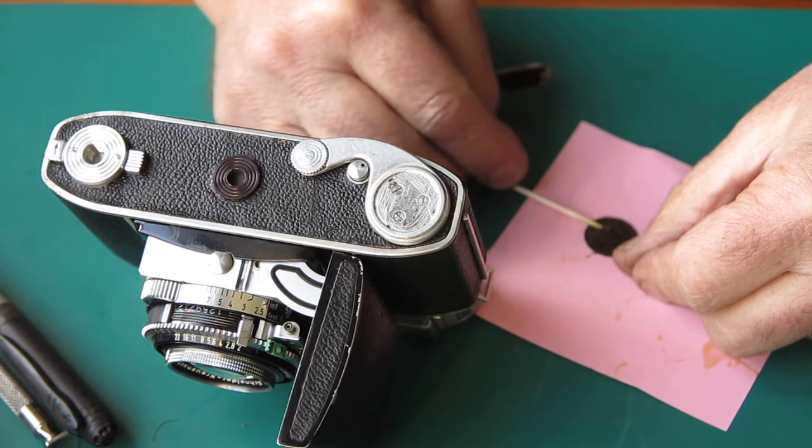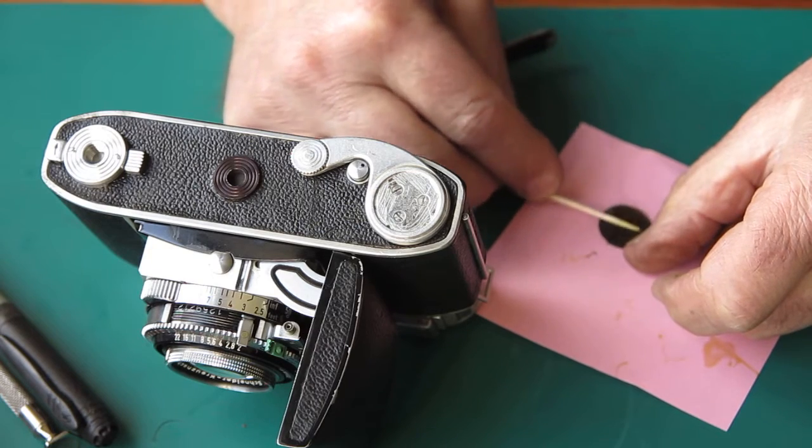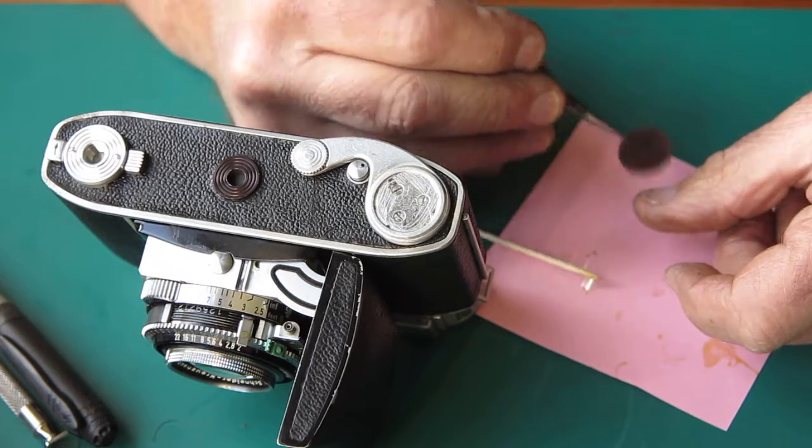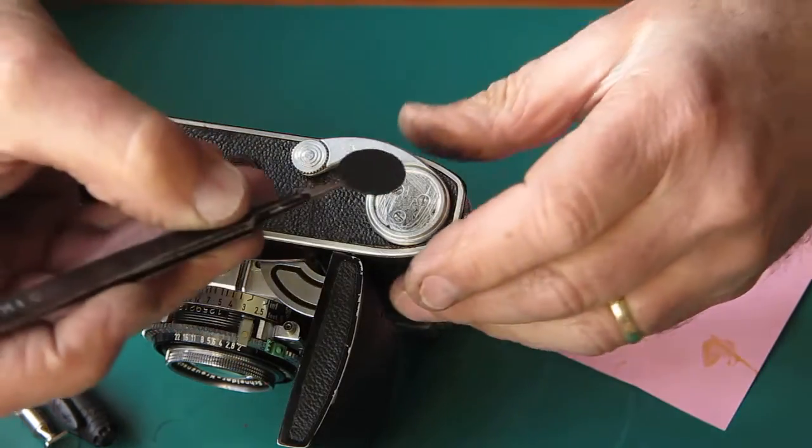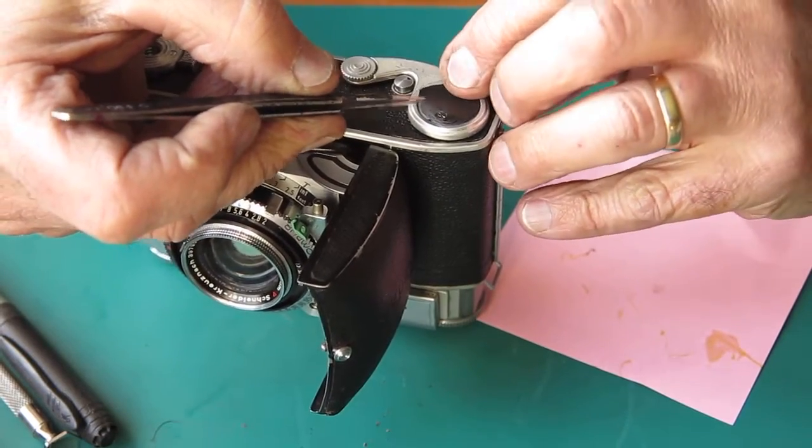One of the problems with cutting patches from old leatherette is of course that the old leatherette is often dry and hard and brittle, and so it's much more interested in fracturing into little tiny pieces than it is in cutting neatly.